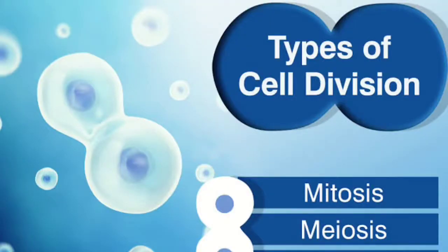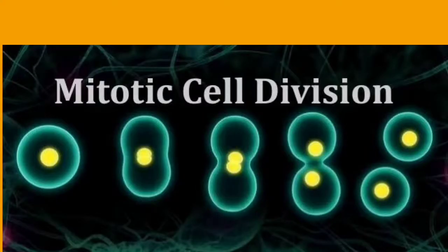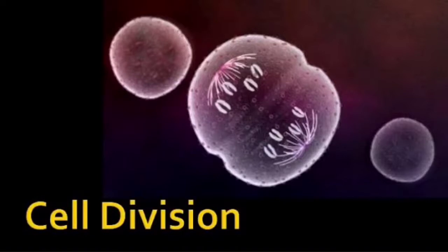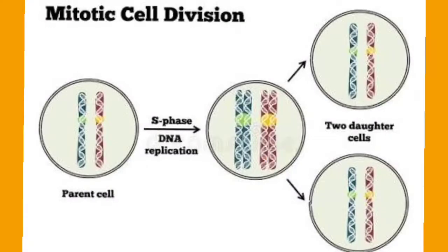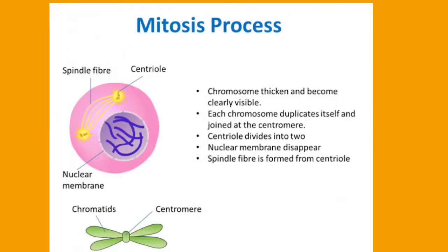Mitosis cell division is also known as somatic division, in which one mother cell divides into two identical daughter cells. They are called daughter cells because they are capable of further division. The daughter cells contain the same number of chromosomes as the mother cell — the chromosome number remains the same.